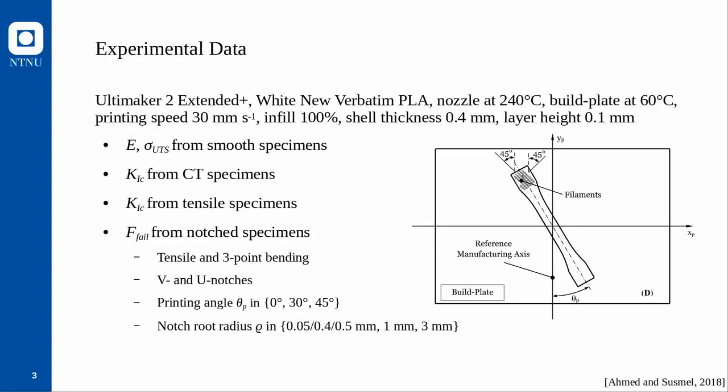The goal of this study is to verify the ASED criterion for FDM printed PLA, using the very same data as Ahmed and Susmel. They printed specimens using specific process parameters, and the printing angle was varied to capture its effect on material properties. The fibers were deposited in alternating layer orientations, orthogonally to each other, and the angle between this grid orientation and the main principal axis of the component was defined as the printing angle.